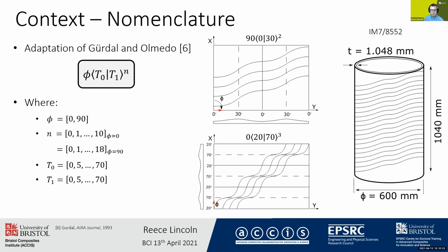I want to quickly go over some nomenclature which is quite important when looking at these CTS cylinders. There are four key variables shown on the left in the box: φ is the direction of initial shearing — if φ is zero it is aligned with the axial direction of the cylinder, and φ of 90 means the direction of shearing is circumferential. T0 and T1 are the angles of shearing, so if we start at T0 of 10 we could end up at T1 of 30, shearing from 10 to 30 degrees. The superscript n is the periodicity, defining how many times we are shearing around the cylinder axially or circumferentially. For example, a 90°[0→30]² configuration has circumferential initial shearing, shearing from 0° to 30° and back to 0° twice around the cylinder circumference.